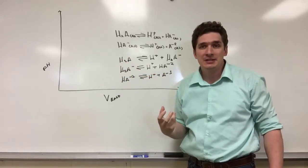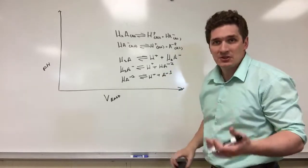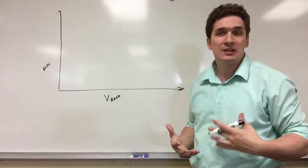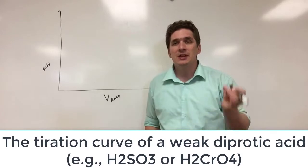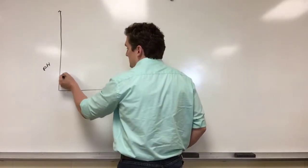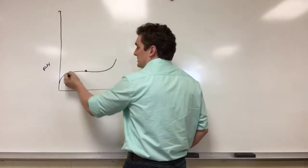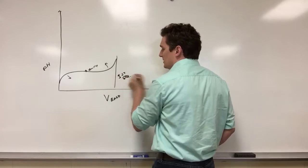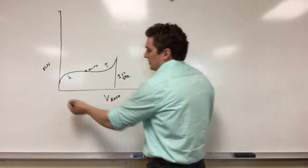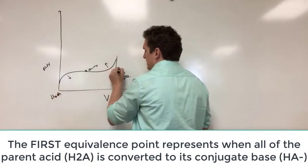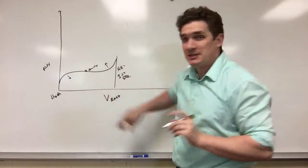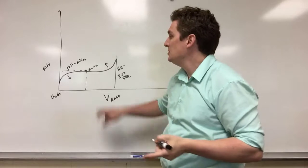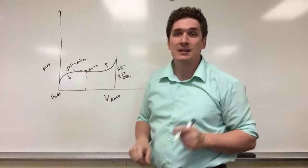What's going to change when we titrate these things is the shape of the curves. Let's start simple and just do the diprotic. We're going to say for the sake of argument that the first deprotonation is reversible — something like sulfurous acid, H2SO3. It's going to start out looking just like a normal weak acid titration. We're going to get a downward curvature and an upward curvature, a midpoint, and then a first equivalence point. This first equivalence point represents where we convert all of our H2A into HA⁻. At this midpoint, the pH equals the pKa for that first deprotonation, so if we know the pH at this first midpoint, we can figure out Ka1.